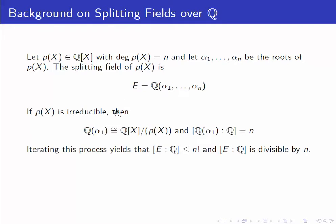If p of x is irreducible, then when we extend Q by any of the roots, say alpha 1, the resulting field is isomorphic to Q of x factored out by p of x. And so the degree of this field extension over Q is n.